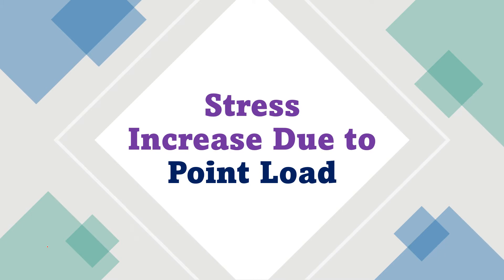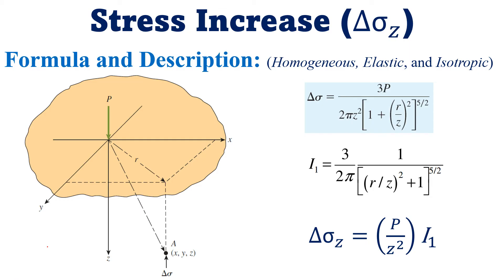To study this, we have a figure to explain the whole phenomena that will take place during the calculation of the increased stress below the point load. First of all, this is a point load, also known as concentrated load P. Its units will be in kilonewtons or in pounds.